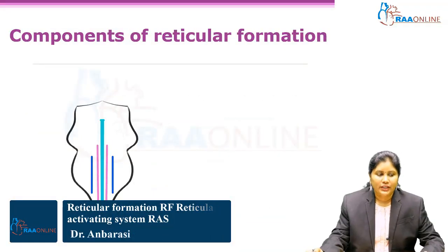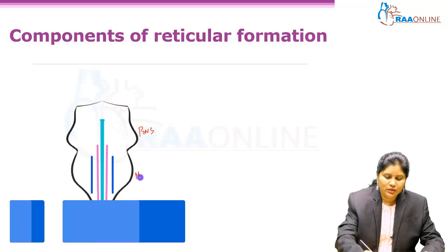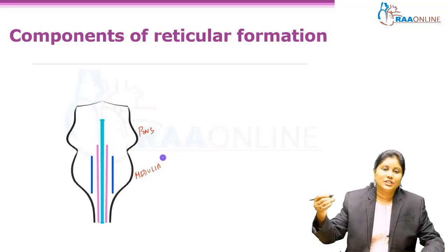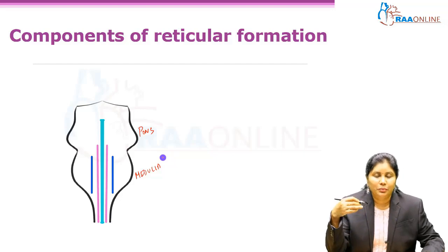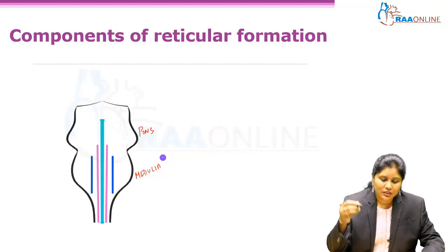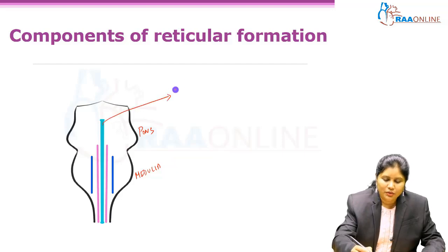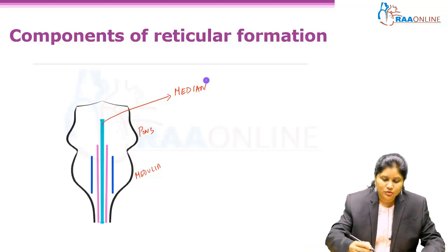Let us see the components of reticular formation. This is pons, this is medulla. There are three groups of neurons — collections of neurons in this area present in the rostral portion of this medulla and the pons, somewhere in the midline. This group of neurons is called the median group of neurons.